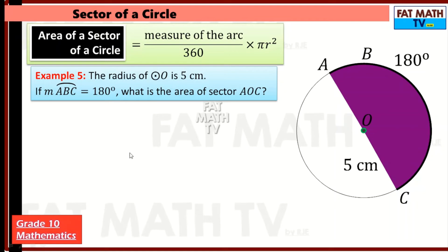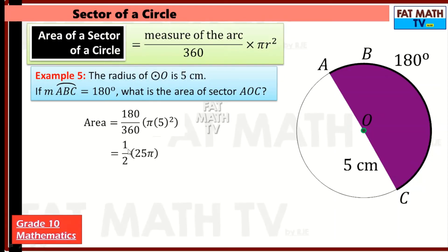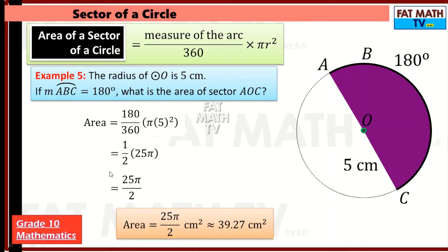Example five: the radius of circle O is 5 centimeters, and the measure of arc ABC is 180 degrees — so arc ABC is a semicircle. What is the area of the sector? Since it's half the circle: 180 over 360 simplifies to 1 over 2. Then times 5 squared, which is 25, giving 25pi over 2 square centimeters, or approximately 39.27 square centimeters.